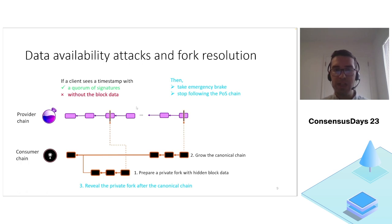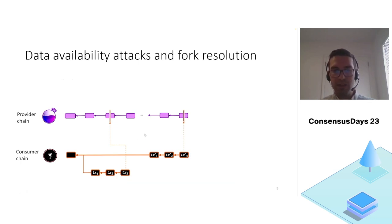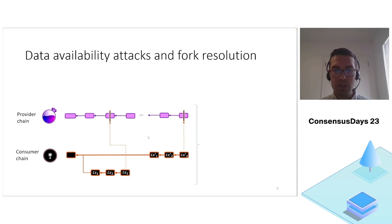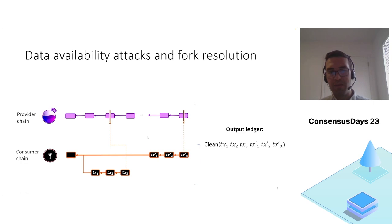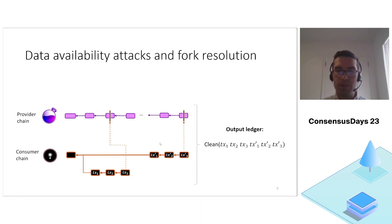Once this data is revealed, clients may still see a fork, and they must resolve it to avoid a safety violation. For this purpose they can use the ordering of the timestamps on the provider chain and then apply a cleanup process to eliminate later transactions that conflict with earlier ones. In our example, the prime transactions conflict with the non-prime ones, so they will be cleaned up once ordering is established using the timestamps.